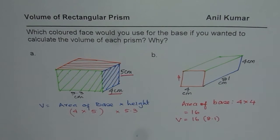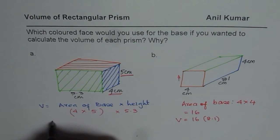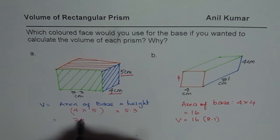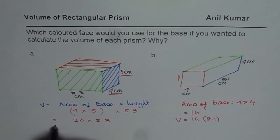So that is the whole idea. So you can have 20 times 5.3. So it becomes easier. Do you see that?